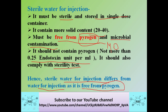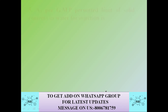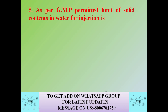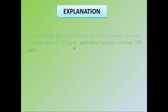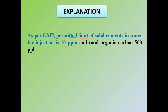Next question: as per GMP, the permitted limit of solid content in water for injection is — option A: 100 ppm, option B: 1.0 ppm, option C: 0.1 ppm, option D: 10.0 ppm. The correct answer is 10 ppm. As per GMP, the permitted limit of solid content in water for injection is 10 ppm, and the total organic carbon limit is 500 parts per billion.